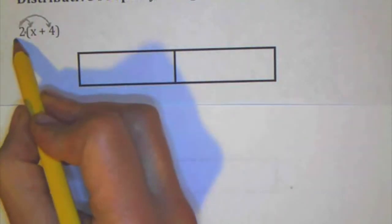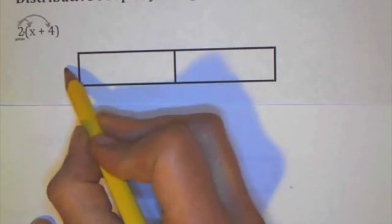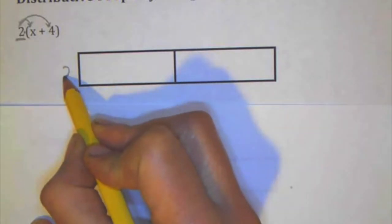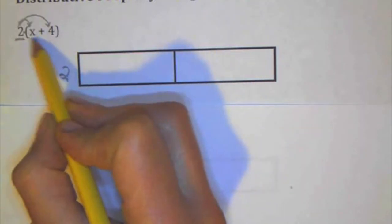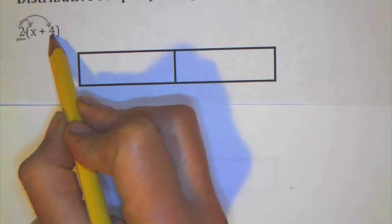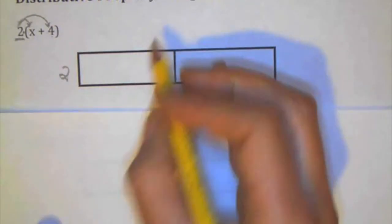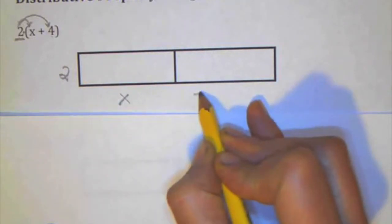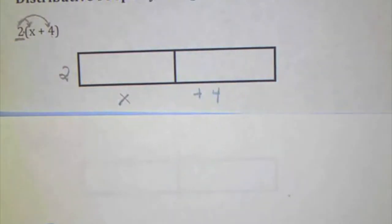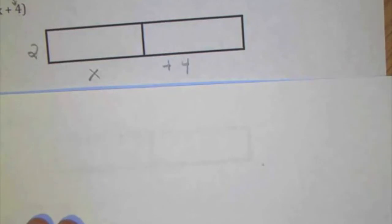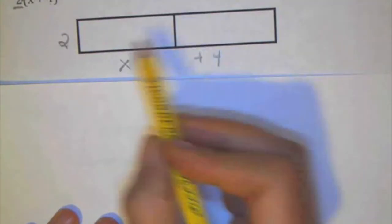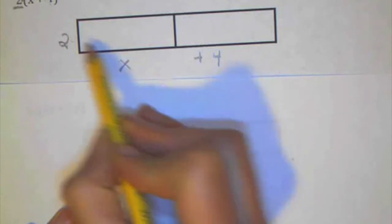So how you set it up is here there's just one term and then within these parentheses there are two terms inside of this group. So I'm going to write this as x plus 4. Each term in the group gets its own little box.